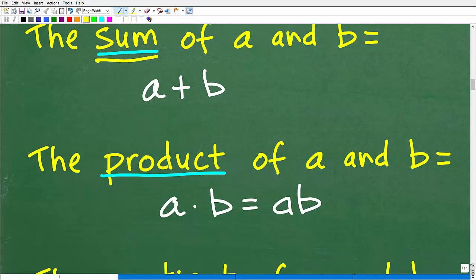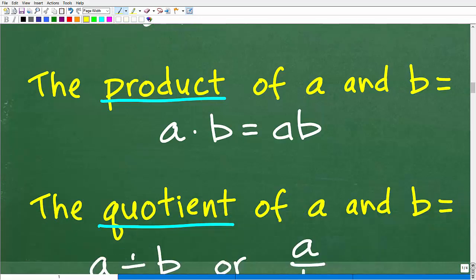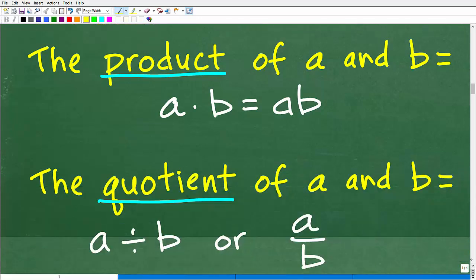Let's go ahead and take a look at the word product. And of course, we're thinking about multiplication when we hear that word. So the product of A and B is equal to A times B or AB. We can write it this way in algebra. Anytime you have two variables next to one another like this, that means multiplication. So that's the product of A and B. Pretty straightforward stuff.